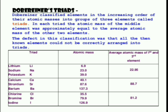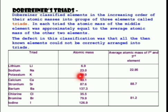For example, the Triad consisting of Lithium, Sodium, and Potassium has respective atomic masses 6.9, 23, and 39. The average atomic mass of Lithium and Potassium is 22.95, which is close to the atomic mass of Sodium. The defect in this classification was that all the then known elements could not be correctly arranged into Triads.